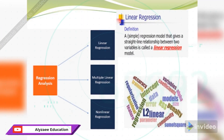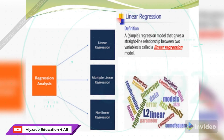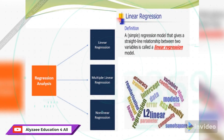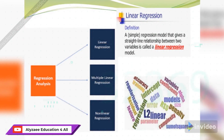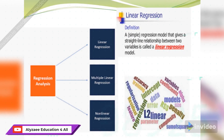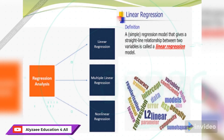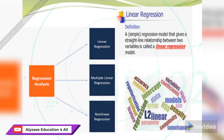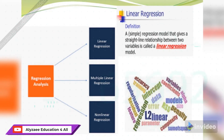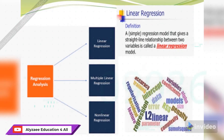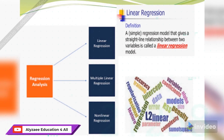In regression analysis we can see three components: one is linear regression, second is multiple linear regression, and third is non-linear regression. What is linear regression? A simple regression model that gives a straight line relationship between two variables — that is called the linear regression model.